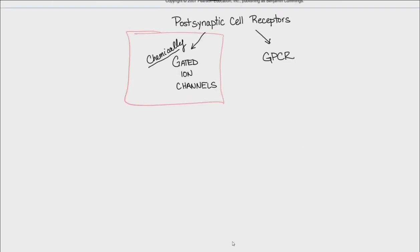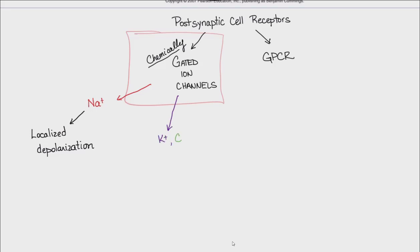So, if the postsynaptic cell receptor is a chemically gated ion channel and it's a sodium ion channel, the cell response is a localized depolarization. But if the chemically gated ion channel lets potassium or chloride through, the cellular response is localized hyperpolarization. The significance of these responses will be covered in another lecture.